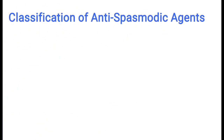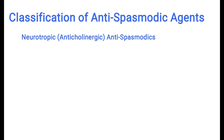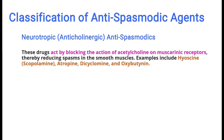Now let's move on to the classification of antispasmodic agents. They are broadly classified into two groups. First, neurotropic or anticholinergic antispasmodics. These drugs block acetylcholine at muscarinic receptors and thus reduce spasms in smooth muscles. Examples of neurotropic antispasmodics include hyoscine, which is also called scopolamine, atropine, dicyclamine, and oxybutynin.